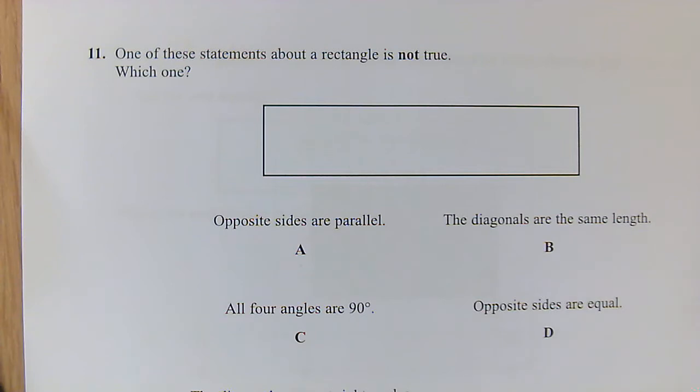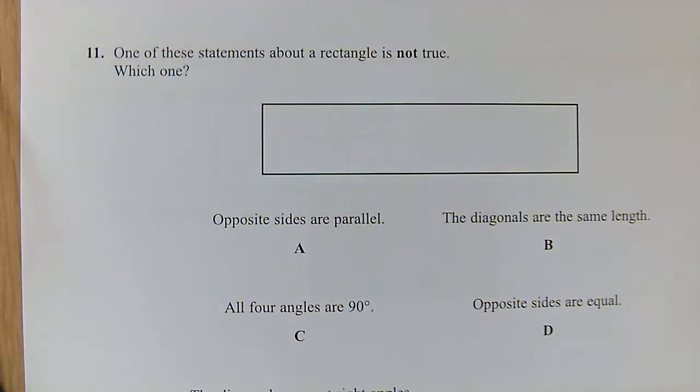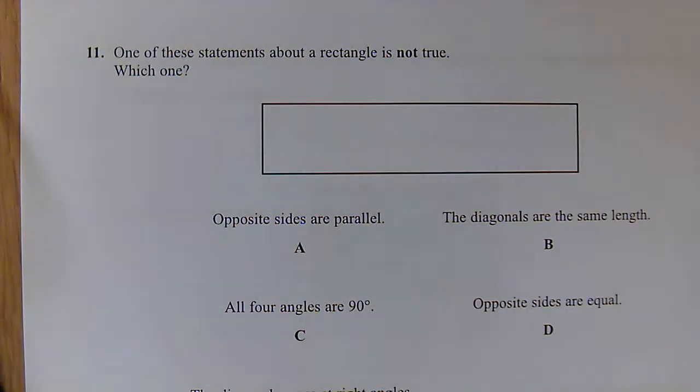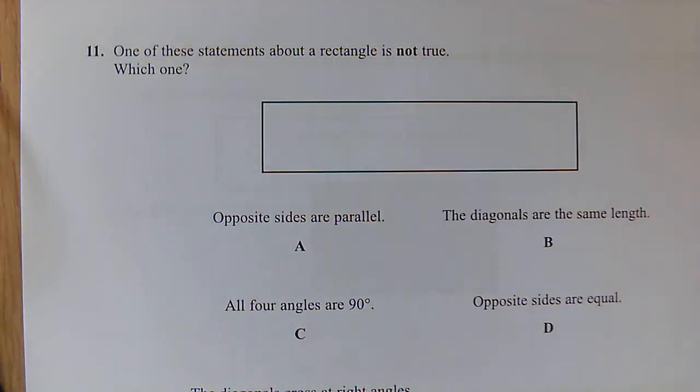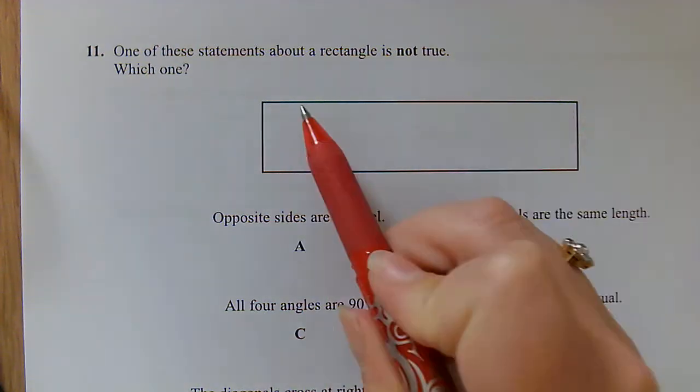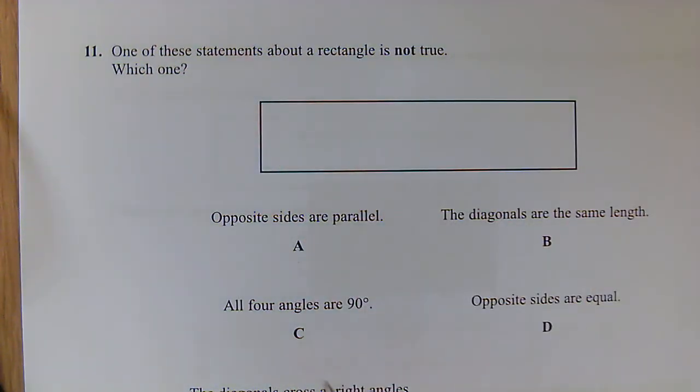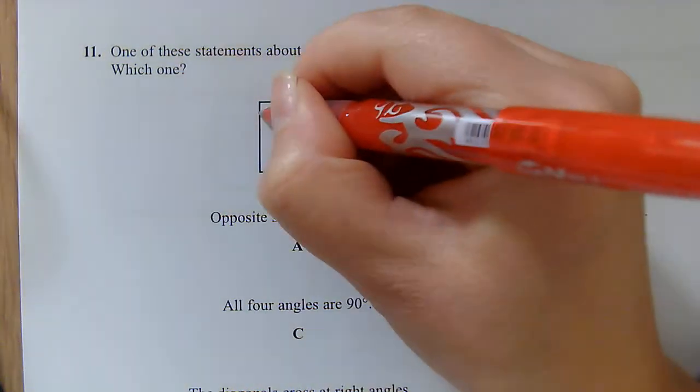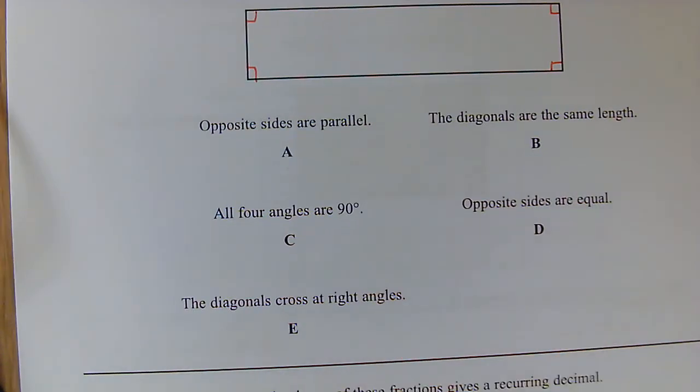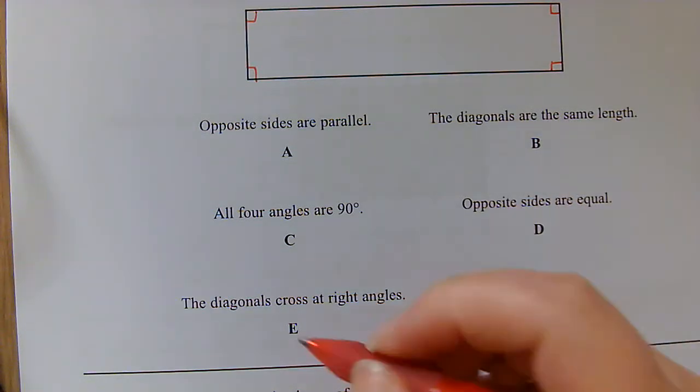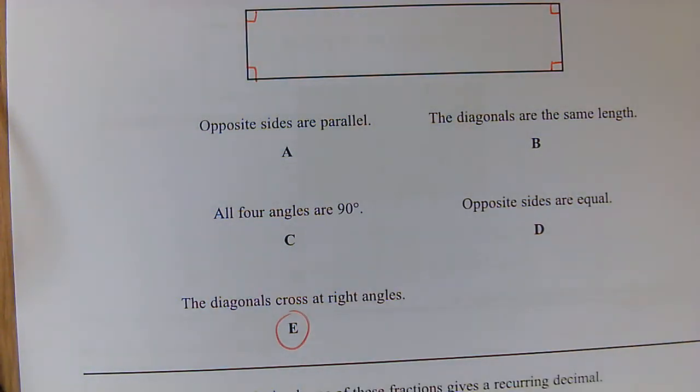Question 11: One of the statements about the rectangle is not true. Which one? The opposite sides are parallel, yep, we've got two pairs of parallel lines here, so that's correct. The diagonals are the same length, yes, that would be correct as well. All four angles are 90, yes, that's true about a rectangle. Opposite sides are equal, yes. And the diagonals cross at right angles? That is not true, so that's going to be E.